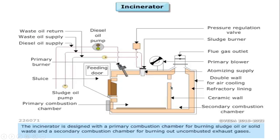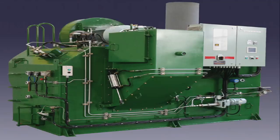If anybody asks you why there are two chambers in the incinerator, your answer would be this: the primary combustion chamber is burning the sludge oil and solid waste, but the remaining unwanted or uncombusted exhaust has been burned in the secondary chamber. Now, why is the incinerator provided on board? On board, whatever sludge or solid waste is generated is being reduced with the help of an incinerator. The incinerator is equipment which helps to reduce on-board sludge and solid waste, ensuring that we are complying with MARPOL Annex 6 during the incineration process — burning the solid waste and sludge without violating MARPOL Annex 6 regulations.